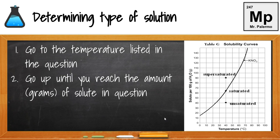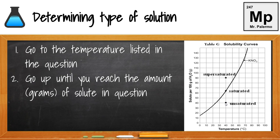Each line represents the saturation point for a specific substance at a specific temperature. Looking at KNO3 (potassium nitrate) at 40 degrees Celsius, the maximum amount of solute I can put in 100 grams of water — the saturation point — is about 65 grams. If I'm only putting in 40 grams, I'm under the saturation line, so I'm unsaturated. If I somehow dissolve more than 65 grams, I would have had to heat it, giving me a supersaturated solution. The 100 grams refers to the water, and the values on the axis show how many grams of solid you're dissolving in that 100 grams of water.